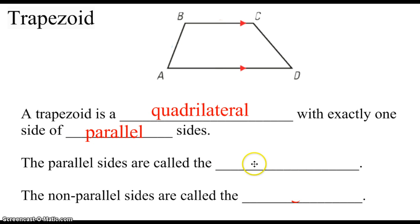The parallel sides, the pieces that have the arrows on them, that's the only way we're going to know they are parallel, are what we call the bases. The pieces that are not parallel in the trapezoid are what we call the legs.